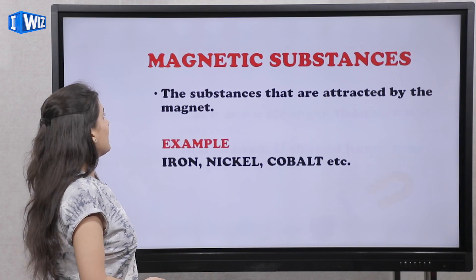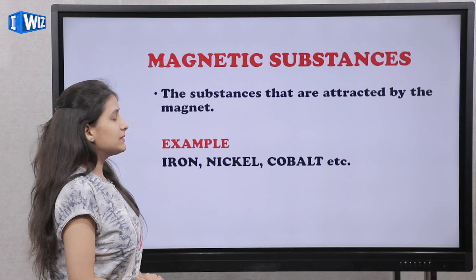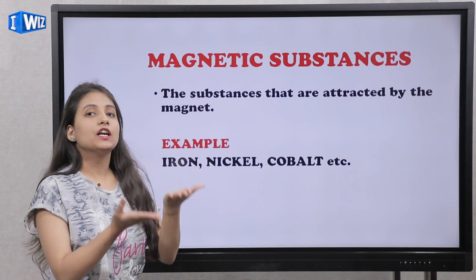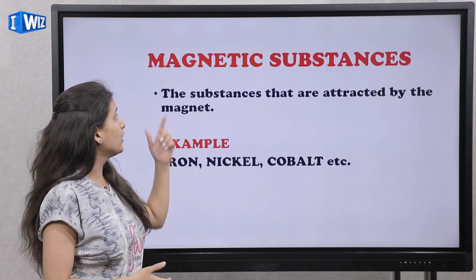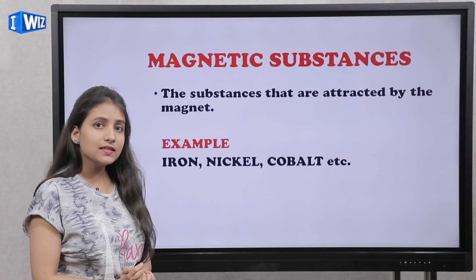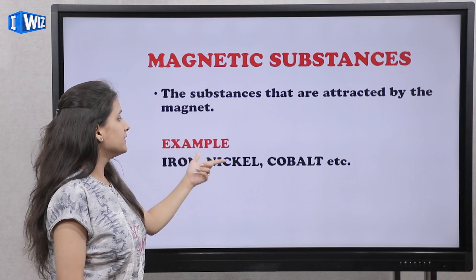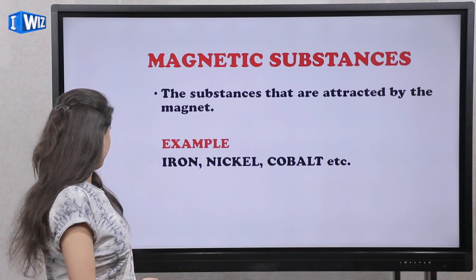Now we will talk about magnetic substances. The substances that are attracted by the magnet are known as magnetic substances. For example, iron, nickel, and cobalt.